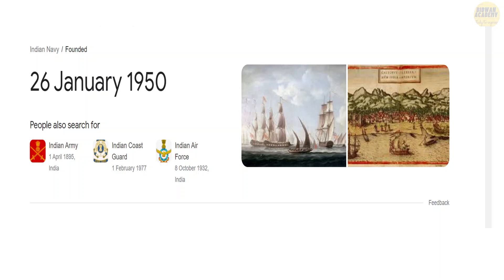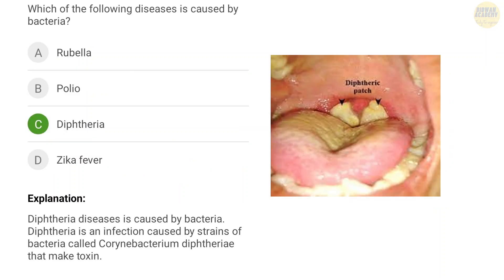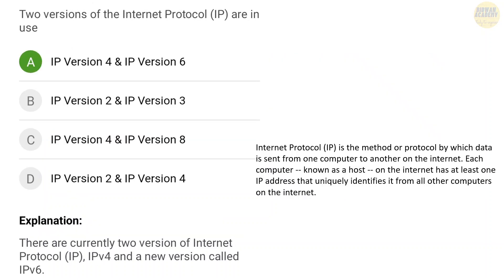Let's start the video with our first question. Question number one: which disease is caused by digital bacteria? The correct answer is option C — Diphtheria is caused by bacteria.